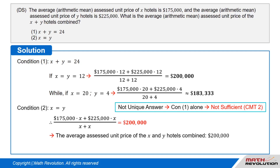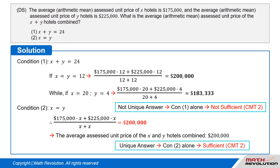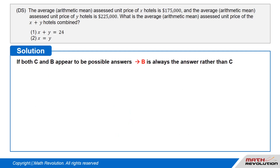Condition 2 tells us that X equals Y. Thus, ($175,000 × X + $225,000 × X) / (X + X) = $200,000, which means the average or arithmetic mean assessed unit price of the X plus Y hotels combined is $200,000. This answer is unique, so the condition is sufficient by CMT2, which states that the number of answers must be 1. If both C and B appear to be possible answers, then B is always the answer rather than C.